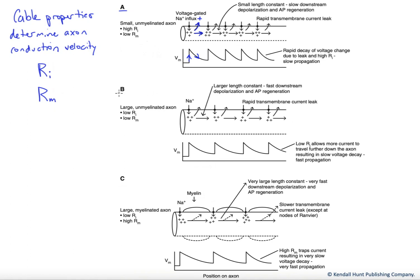If we come down to B, we can see that we have a little bit better scenario in terms of velocity, propagation of velocity. And that's because our axon is larger in diameter. And what this does is it reduces this internal resistance.